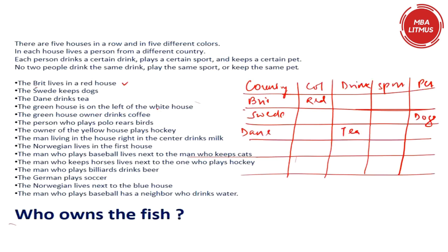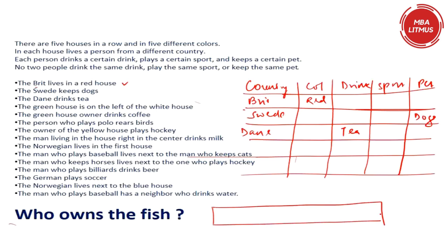Now the green house is on the left of the white house. There is something about the orientation and order of the houses which is not a variable we have plugged in yet, so let us take it separately. There are five houses: house number 1, 2, 3, 4 and 5. We will reserve this orientation clue for now. The green house owner drinks coffee — reserving this for now.